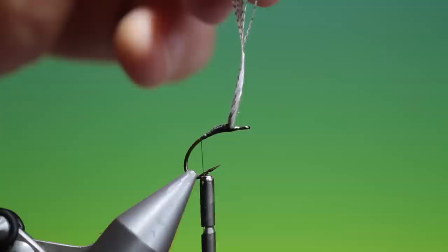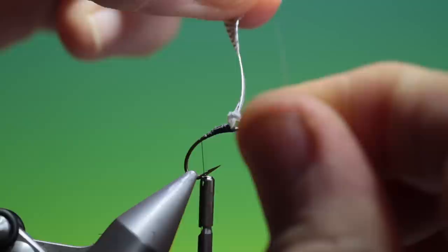Then we take only two fibres, not one, not three, two. From that side. And we separate the wing. Like so.